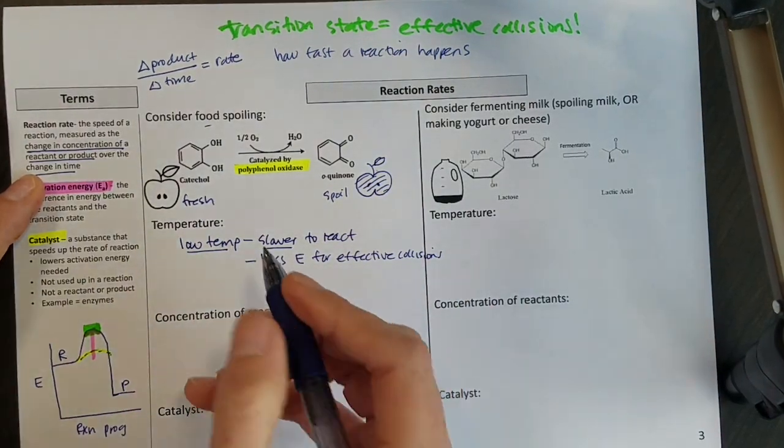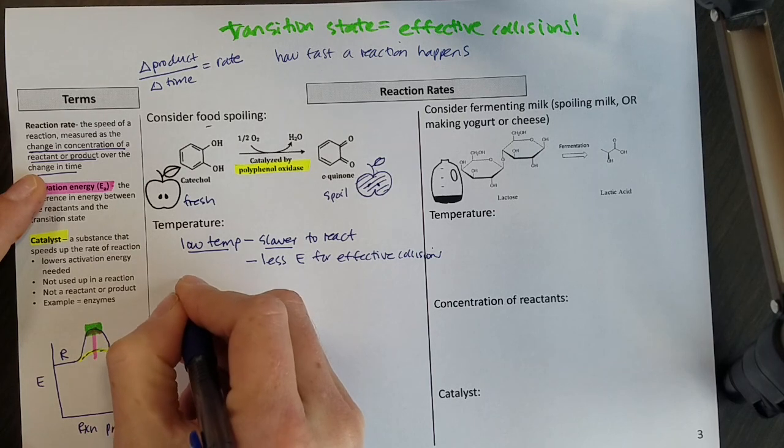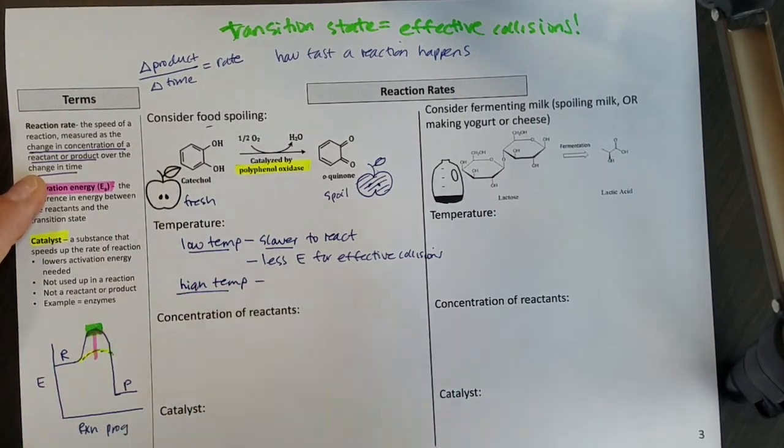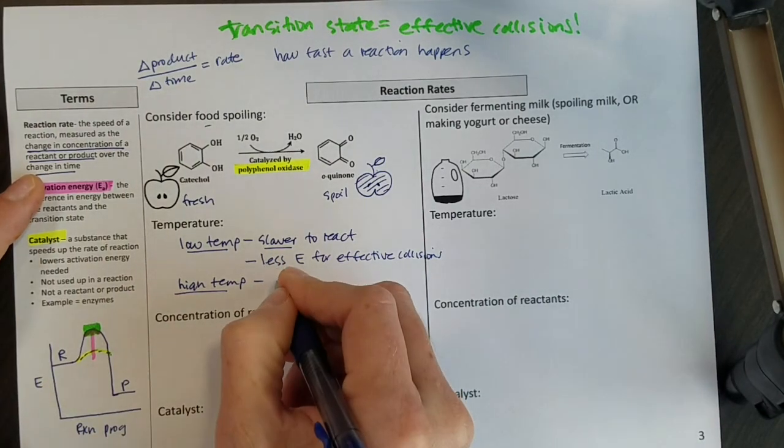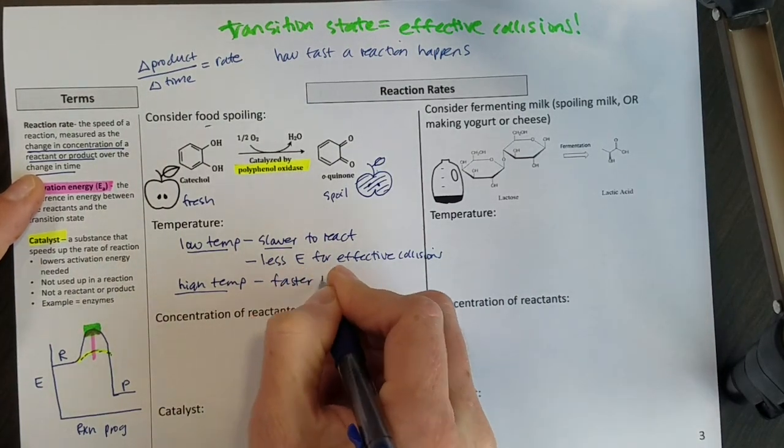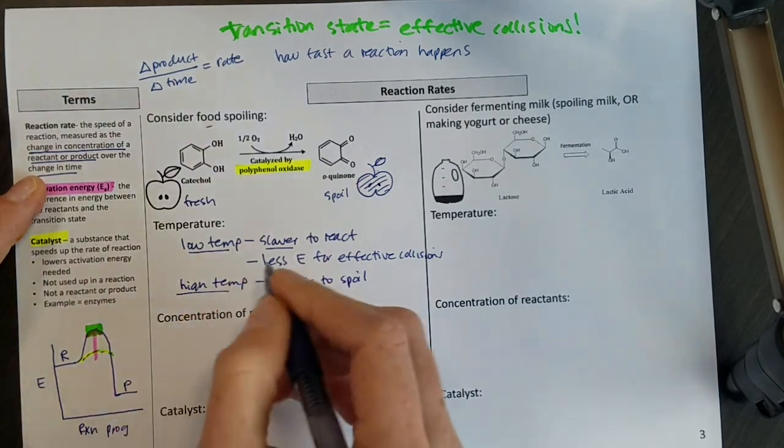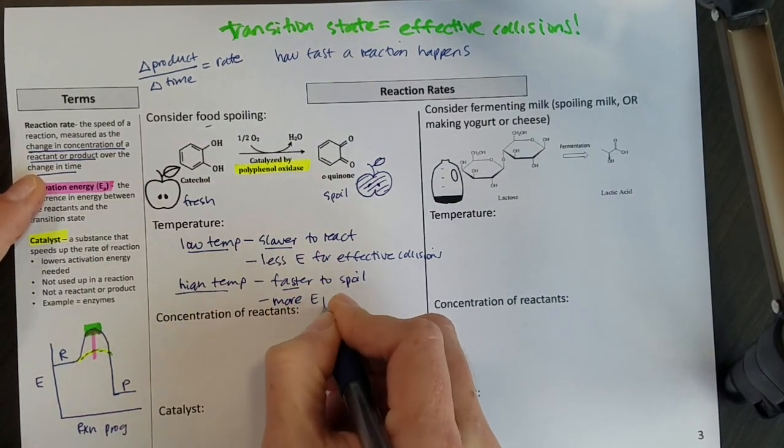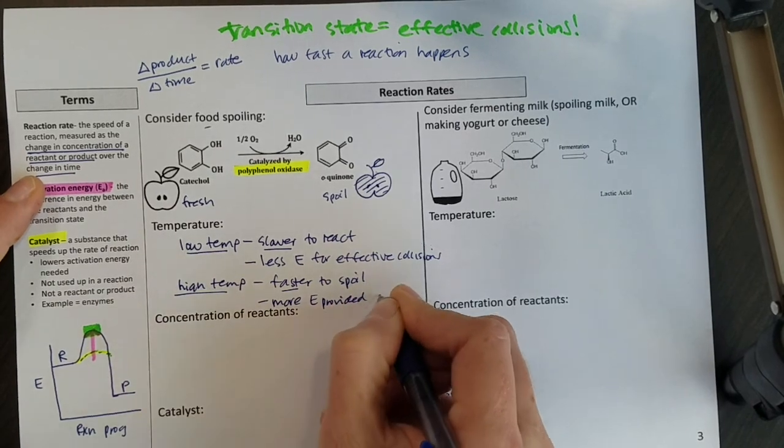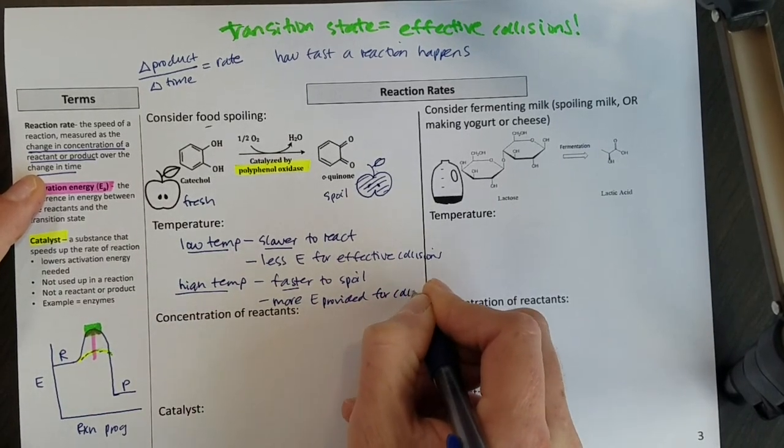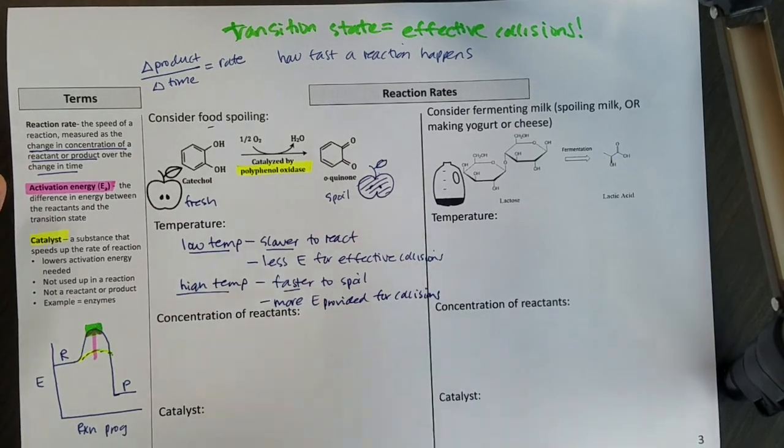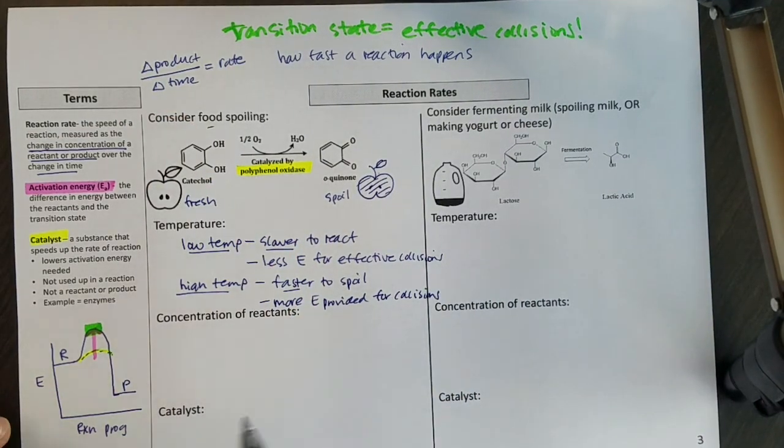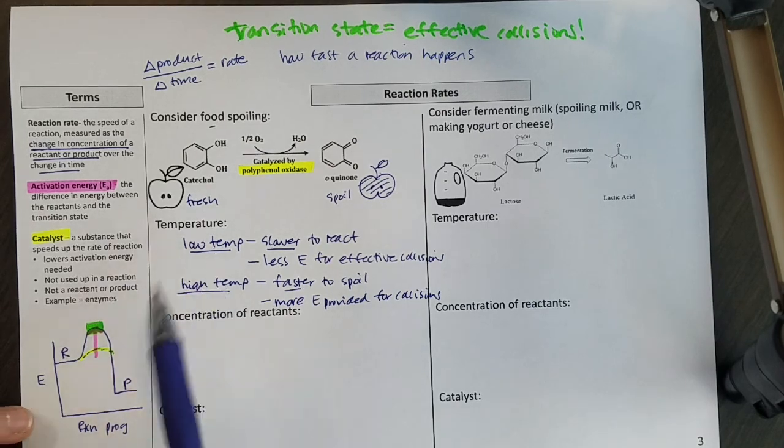In contrast, you're out at a picnic or something like that in the summertime and you have relatively high temperatures, your food is all going to spoil quickly. So then it would be faster to spoil, and that's because you have more energy provided for those collisions. If it's warm outside, all the things in your food are colliding really quickly, and your food's going to go bad quickly. So we put things in the refrigerator.